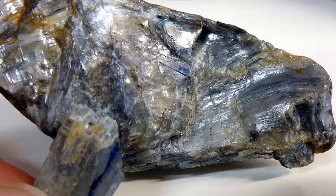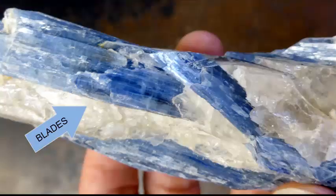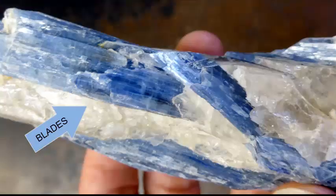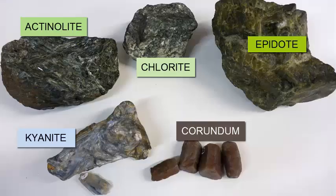The final mineral is blue to grayish in color and has a crystal shape described as blades — long, flat minerals shaped like a sword blade. When thin, the blades are flexible, so you often see the crystals bent. This mineral is called kyanite. In all cases, these five additional minerals can be distinguished from each other and the 20 minerals described in the first video by their crystal form. But each also has other distinctive properties that corroborate your identification.